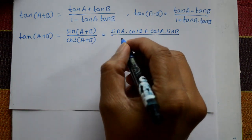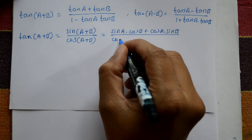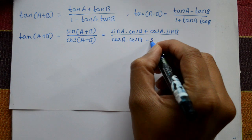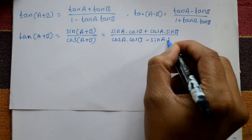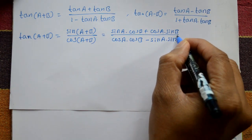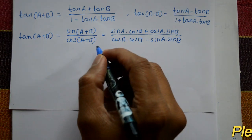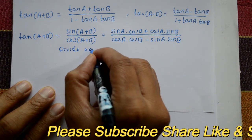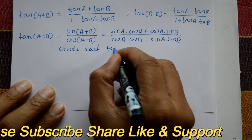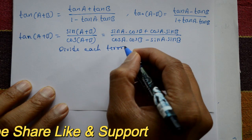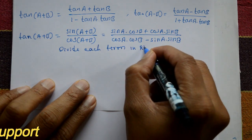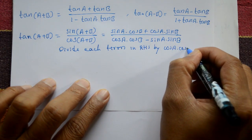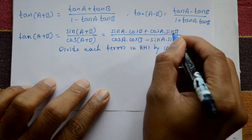And the denominator: cos(a+b) is also a standard formula — cos(a+b) is equal to cos a into cos b minus sin a into sin b. Now divide each term on the right hand side by cos a into cos b. There are four terms total — two in the numerator and two in the denominator.